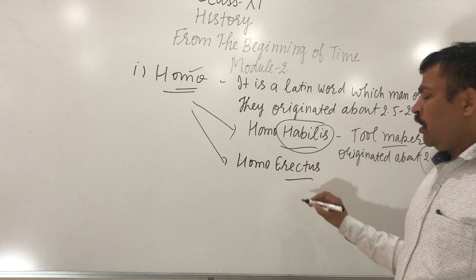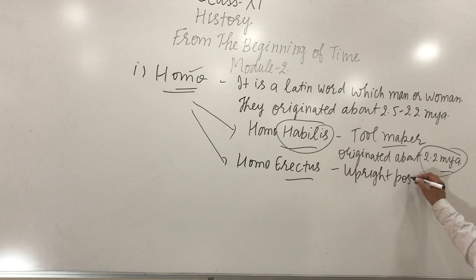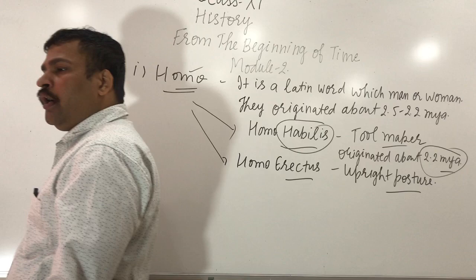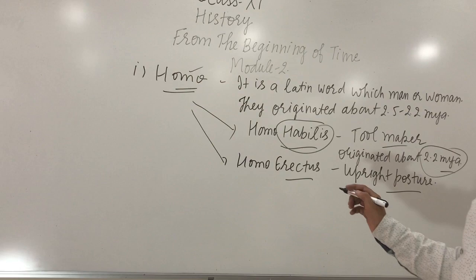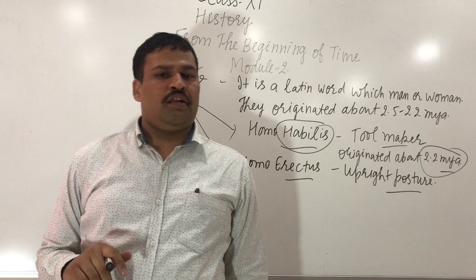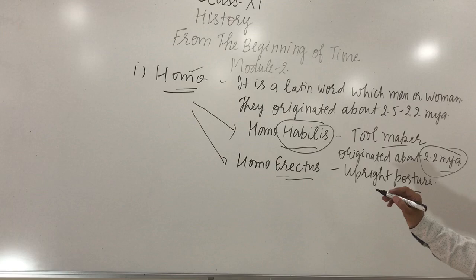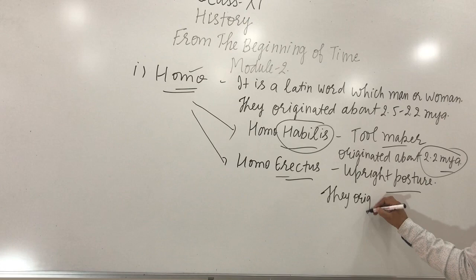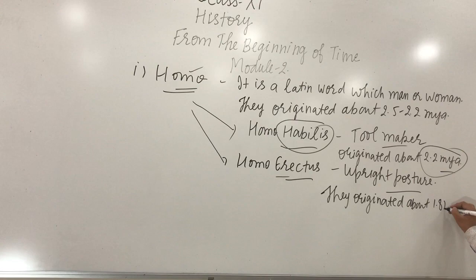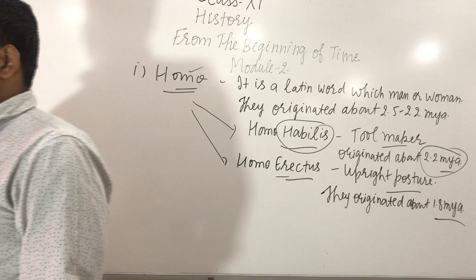Next is Homo erectus, which means upright posture. We have discussed upright posture - it means they can walk upright like we are moving. This characteristic feature was not found in earlier creatures like primates and hominoids. This was a plus point. They originated about 1.8 million years ago, and gradually we are moving towards the modern form.